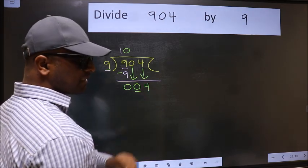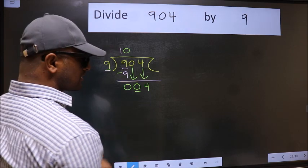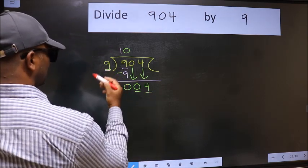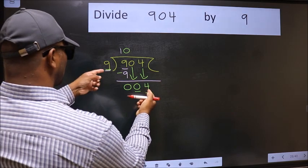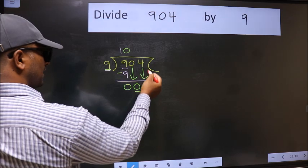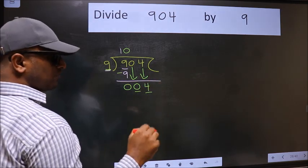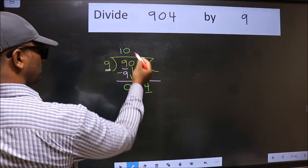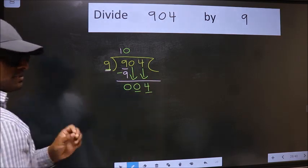After this step, the mistake happens. And the mistake is this: here we have 4 and here 9. 4 is smaller than 9, and we don't have any more numbers to bring it down. So what many do is they directly put dot, take 0. Which is wrong.